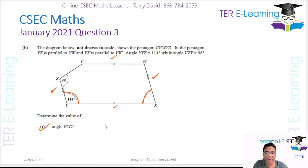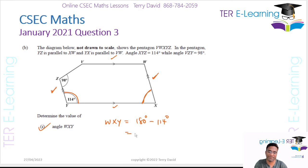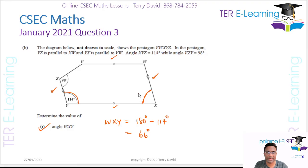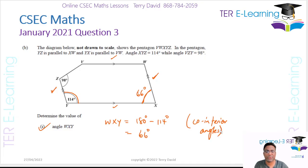To get WXY: WXY is simply 180 degrees minus 114 degrees, which gives 66 degrees. So this angle here is 66 degrees. We're making use of co-interior angles here.